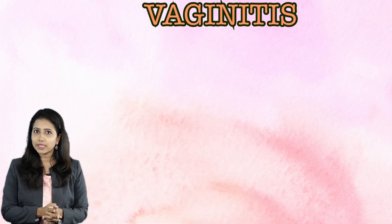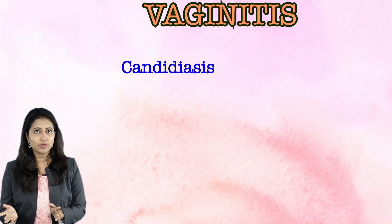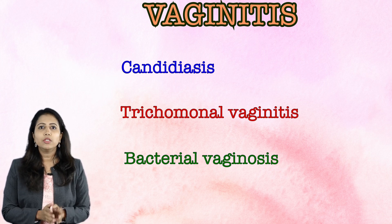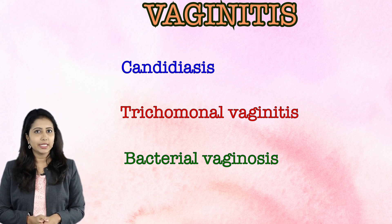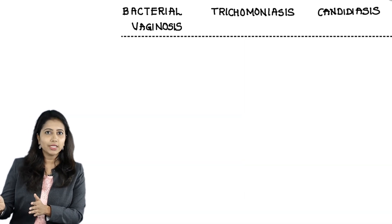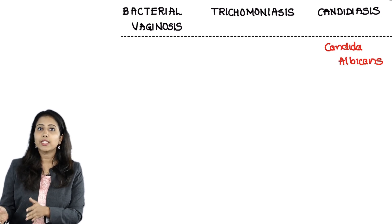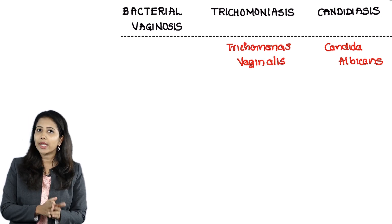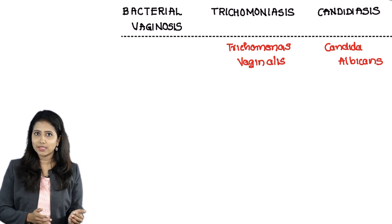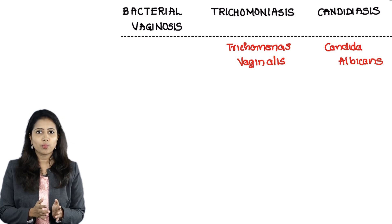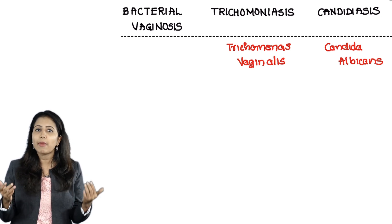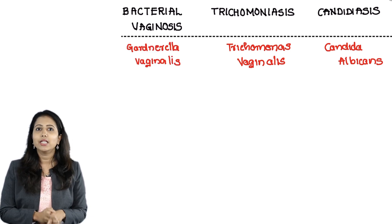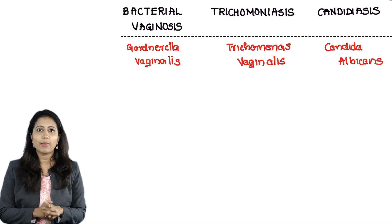Vaginitis can be caused either due to candidiasis, or it could be trichomonas vaginitis, or this could be due to bacterial vaginosis. Let us see first the organisms implicated. In candidiasis it is due to the fungus Candida albicans, whereas in trichomonas infection it is due to Trichomonas vaginalis which is a parasite, whereas in bacterial vaginosis it is a bacterial infection caused by a polymicrobial flora, but the most common one implicated is Gardnerella vaginalis.